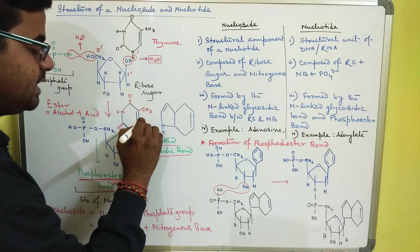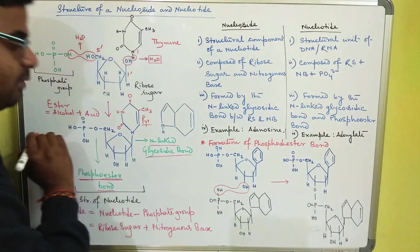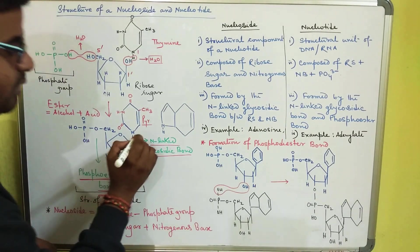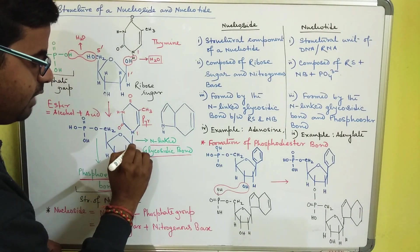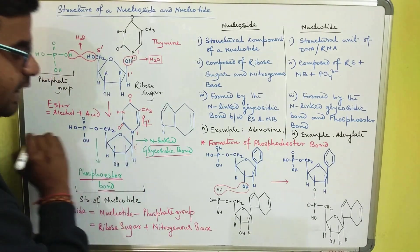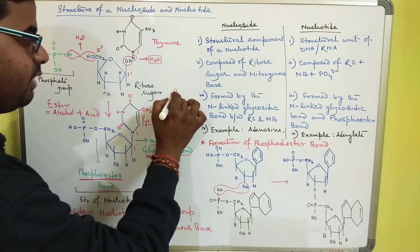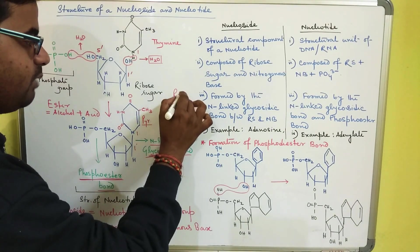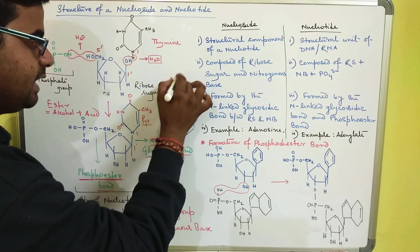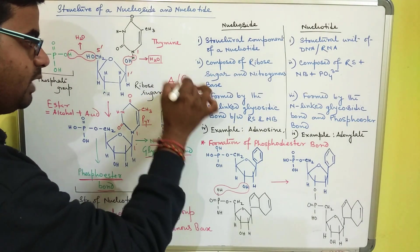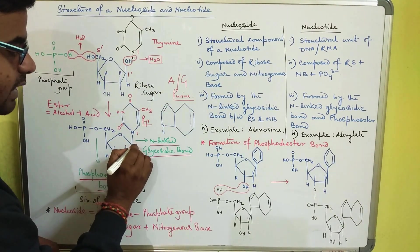If it is a pyrimidine, the bond is formed between the number one nitrogen and the one prime carbon atom. If it is a purine molecule — for example adenine or guanine — the bond is formed between the one prime carbon of the ribose sugar and the ninth nitrogen of the purine.